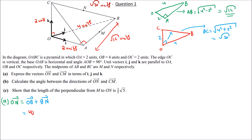We have 4J plus BN. BN is half of BC because N is the midpoint of BC. To find vector BC, we go BO + OC, since we need to find the direction.